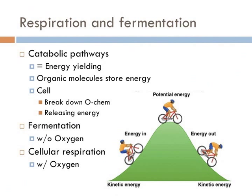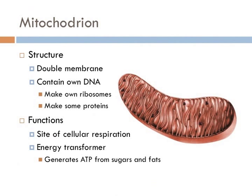When this process is completed in the presence of oxygen, it is known as aerobic respiration. In the absence of oxygen, it is known as anaerobic respiration or fermentation. In eukaryotes, this process is completed in the mitochondrion — a double membrane structure that is really an energy-producing bacteria held hostage by eukaryotes. We know this because it contains its own DNA, makes its own ribosomes, and produces some of its own proteins.